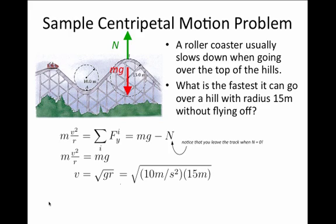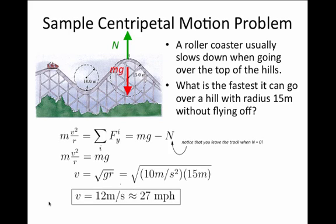then we have that v is the square root of 10 times 15 and that works out to be about 12 meters per second or 27 miles per hour if one converts units. This represents the maximum speed over which the roller coaster car will simply fly off the track and we won't be able to maintain that circular motion anymore.